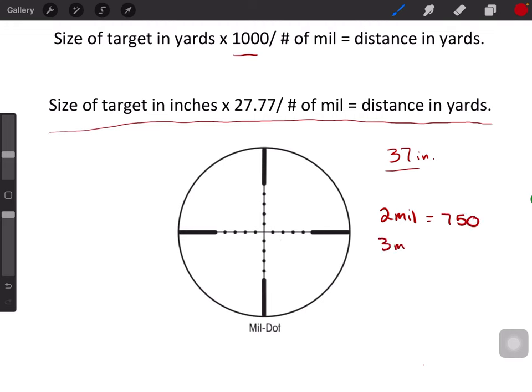And then at three mil, your target I believe is 500 yards, and so forth and so on.